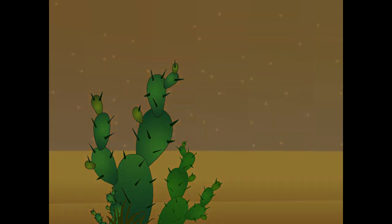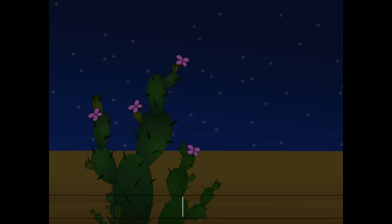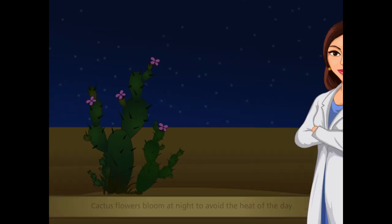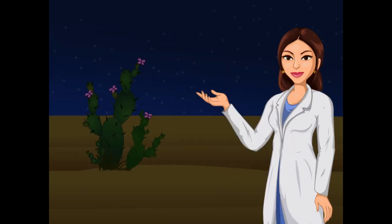It's getting dark. You know the flowers of the cactus bloom at night to avoid the heat of the day. So, this is how cactus lives easily in deserts.